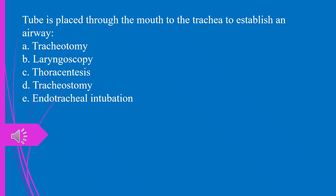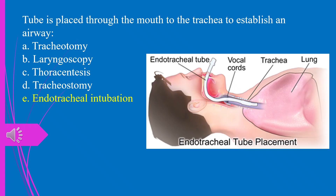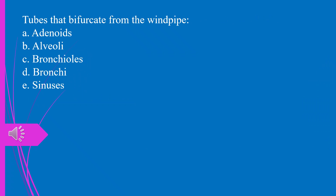Question 42. The tube placed through the mouth to the trachea to establish an airway: a) tracheotomy, b) laryngoscopy, c) thoracentesis, d) tracheostomy, e) endotracheal intubation. The answer is e, endotracheal intubation.